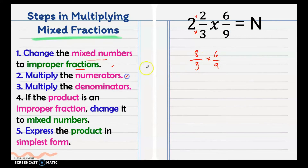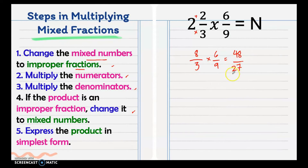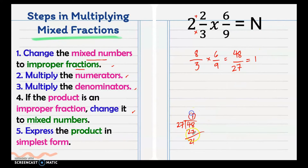Multiply the numerators — we have 48 — and multiply the denominators — we have 27. Now, if the product is an improper fraction, change it to mixed numbers. Our answer is improper since the numerator is greater than the denominator. To change improper to mixed, divide the numerator by the denominator. We have 48 over 27, so our whole number is the quotient which is 1, the remainder is the new numerator, and copy the denominator which is 27.